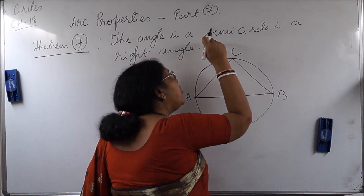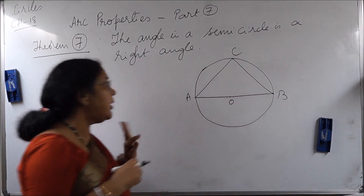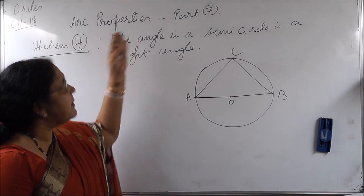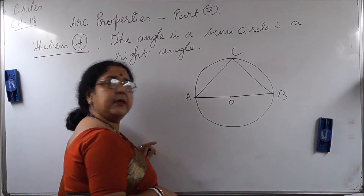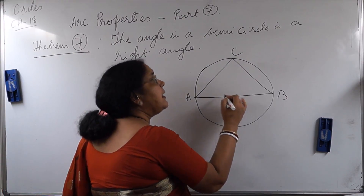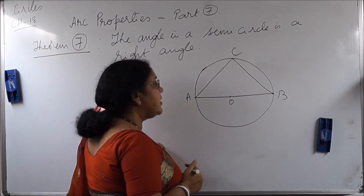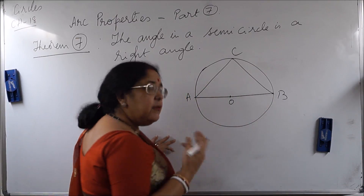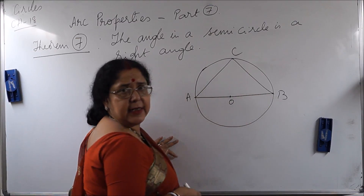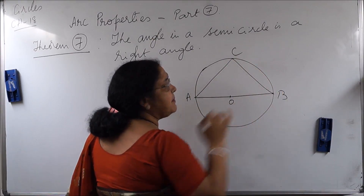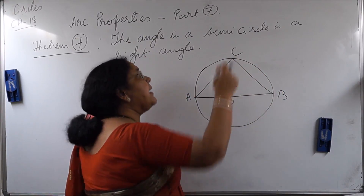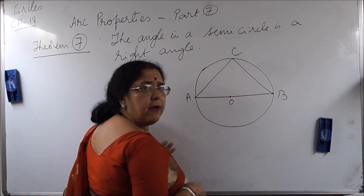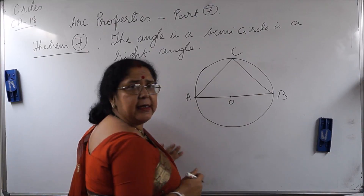We have to prove, according to this theorem, that this angle is 90 degrees. This is already proved — we are verifying it for your sake. Using our previous theorem of arc property, the angle subtended by an arc at the center of the circle is double the angle in the remaining part of the circle. Here the angle subtended by arc AB at center O is angle AOB, which is a straight angle — that means angle AOB is 180 degrees. So angle ACB will be half of angle AOB.